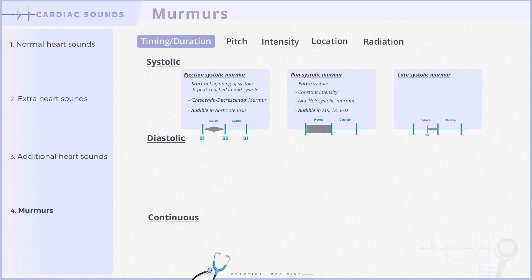The last subcategory of systolic murmurs is the late systolic murmur. This murmur begins in the middle of systole and extends until the second heart sound. These murmurs can be heard with mitral leaflet prolapse.